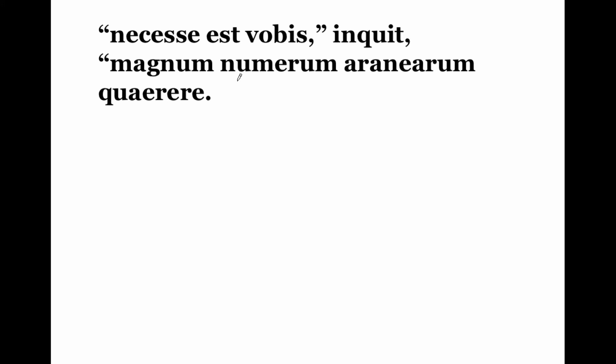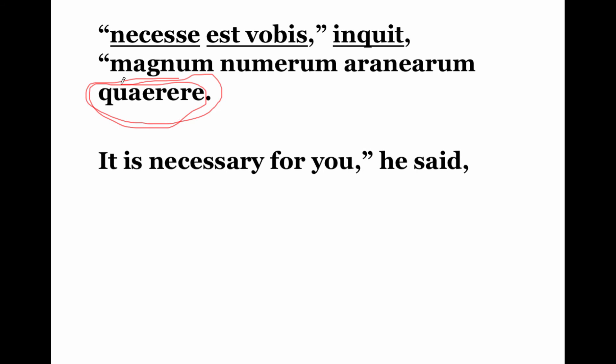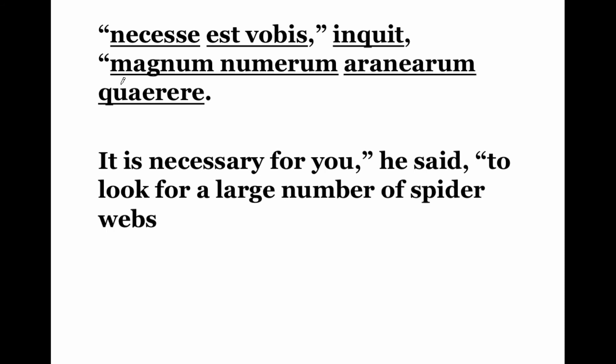Necesse est vobis, inquit, magnum numerum aranearum quairere. It is necessary — we learned this construction with 'difficile est.' It is necessary for you, plural, he said — and the action it is necessary for you to do is expressed in an infinitive. It is necessary for you to look for — quairere — a large number, magnum numerum. Aranearum means of spider webs — this is a genitive plural ending.